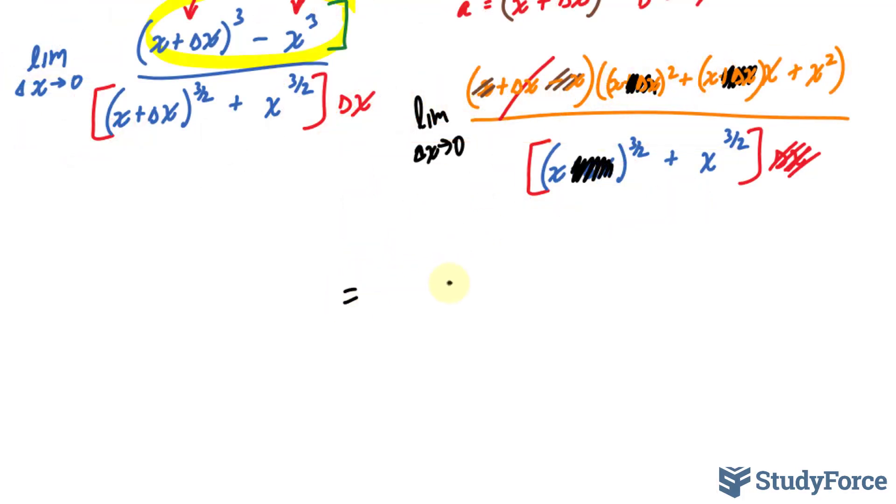Now that the limit has been taken we don't need to show that symbol anymore. So what are we left with at the top? x to the power of two plus x to the power of two, x times x, plus x to the power of two over x to the power of three over two plus x to the power of three over two.